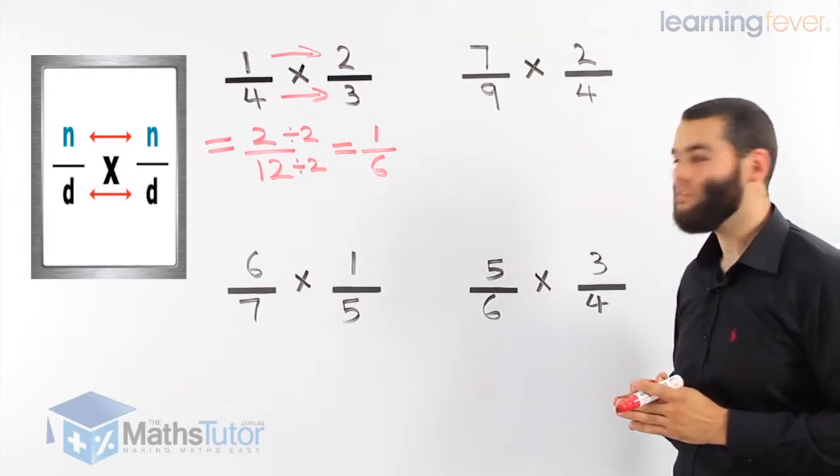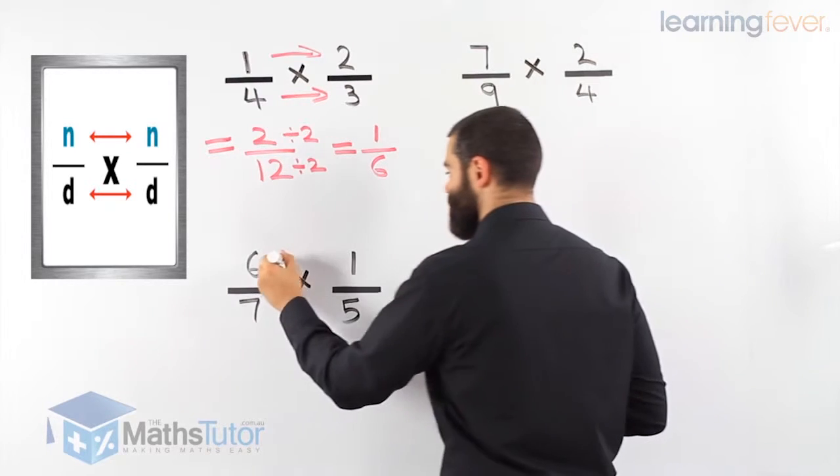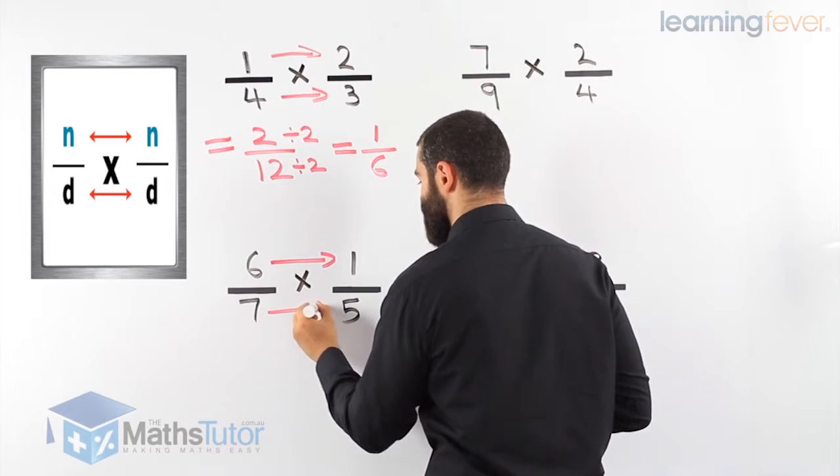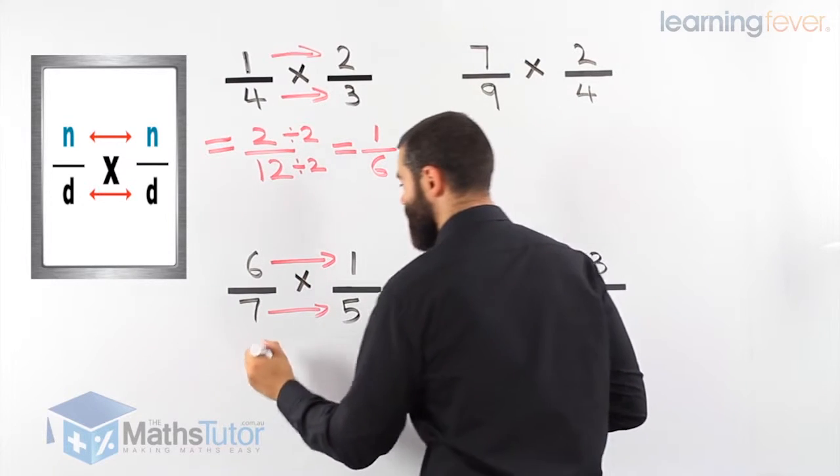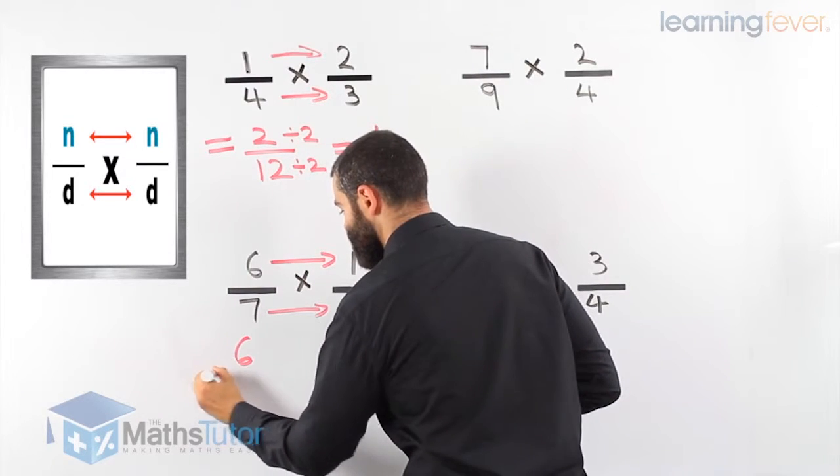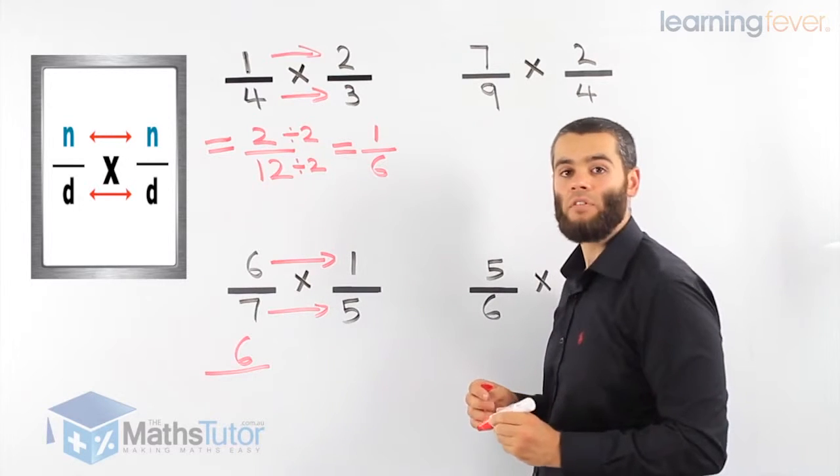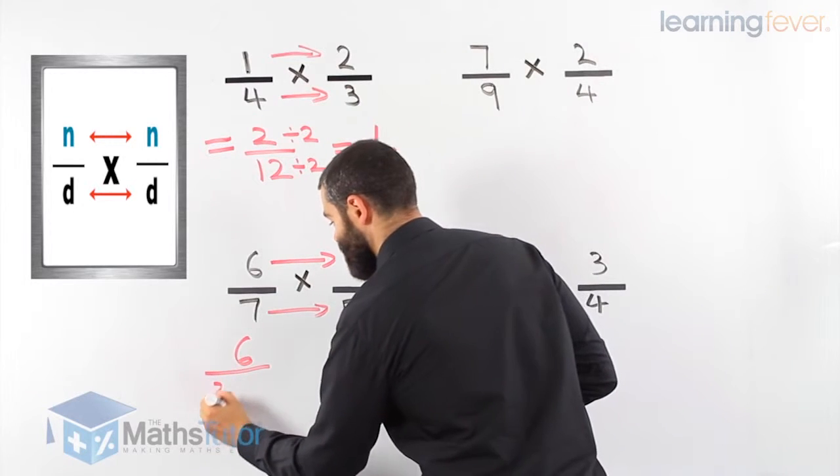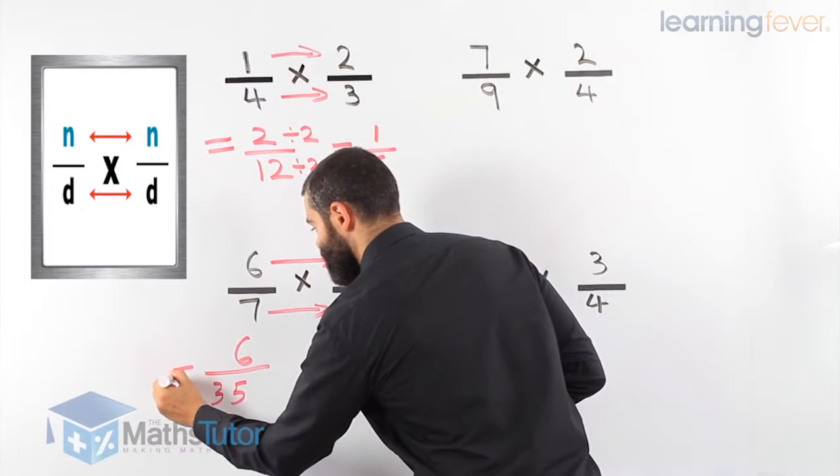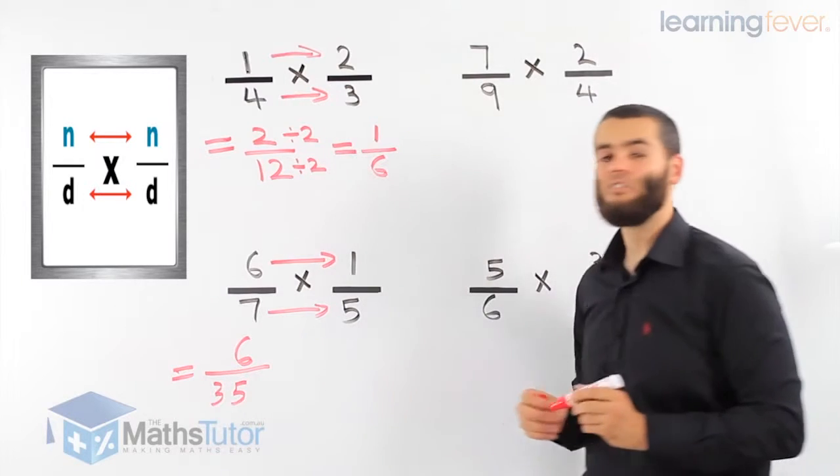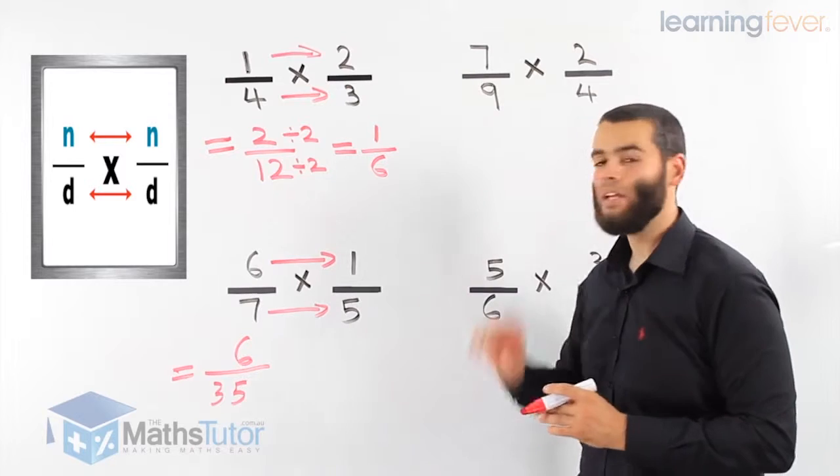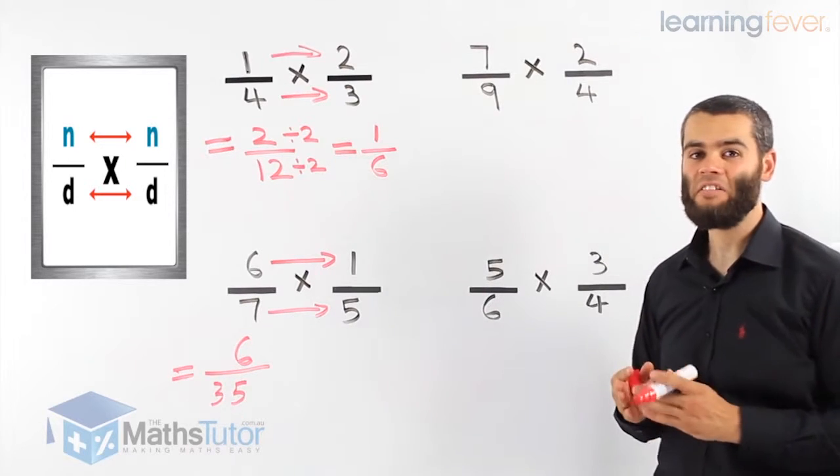Six over seven times one over five. Top times top, bottom times bottom. Six times one is six, and seven times five is 35. So our answer is six over 35. Can we simplify any further? We can't. This is our final answer.